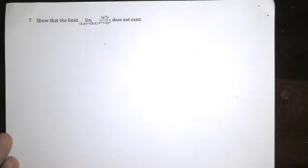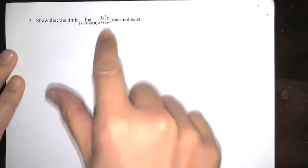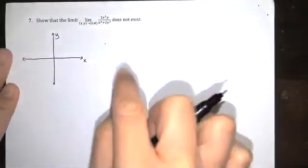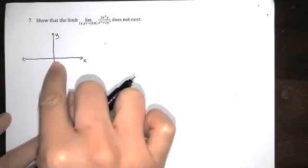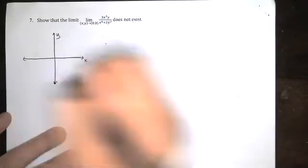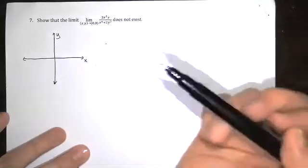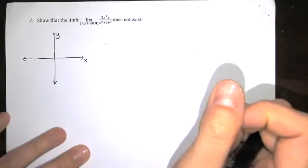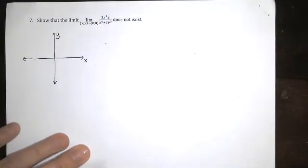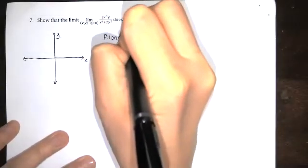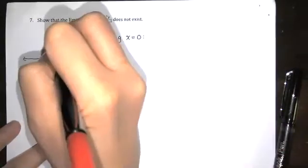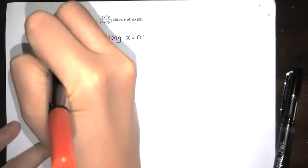On this last question, we're asked to show that this limit does not exist. Now, this is another 0 over 0 indeterminate form. But we're told in advance that it doesn't exist and we're asked to show it. So I'm going to draw my x, y plane. Now, remember, these are z values. They're above or below the x, y plane here. That's 0, 0. But we want to approach 0, 0 from a couple of different directions and show that we get two different limits. Because if the limit doesn't exist, like that's one way that we can prove that it doesn't exist.